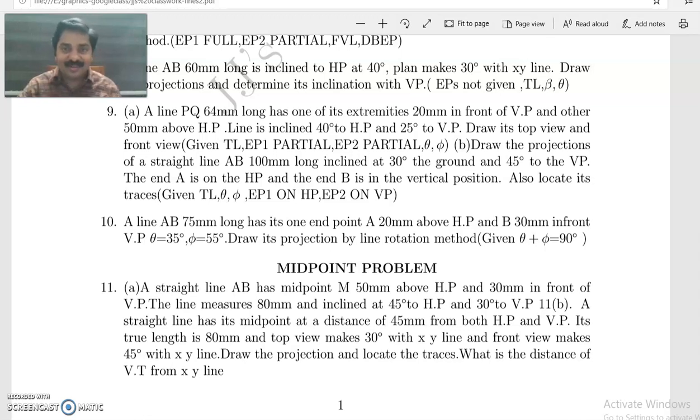This is problem 9B: Draw the projections of a straight line AB, 100mm long, inclined at 30 degrees to the ground and 45 degrees to the VP. End A is on HP and the end B is on VP.